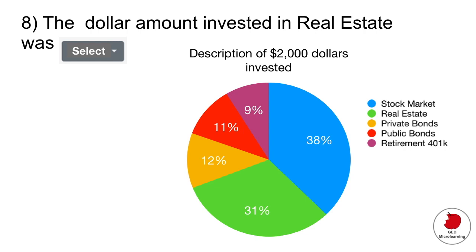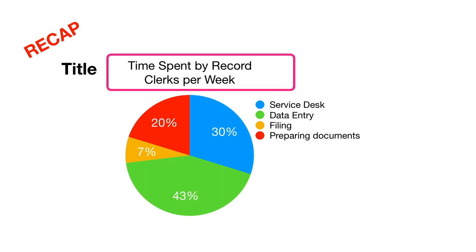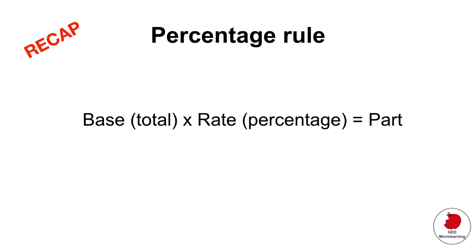This next question is one of these drop down menu questions. Usually they'll give you a graph that you have to study to answer the question. Let's quickly remind ourselves how to read one of these graphs. First, you want to read the title because this is telling you what you're looking at. Here we're looking at the time spent by a record clerk per week. Then you want to look at the legend - the legend is telling you what these colors in the pie graph represent. If we look at the red dot, it says the red slice means preparing documents, so record clerks spend 20% of their time per week preparing documents. Then remember the percentage rule - you would multiply the total times the rate and that would give you the part.